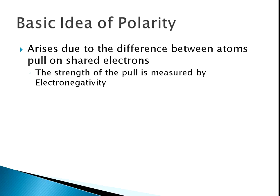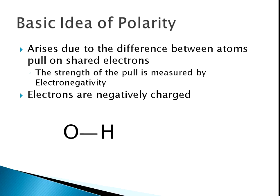When you have a bond in chemistry, you've got two atoms sharing electrons, but they're not necessarily shared equally. The other thing you need to know is that electrons are negatively charged. So let's consider what we call the OH bond — an oxygen atom bonded to a hydrogen atom. The oxygen is a greedy atom; it's very electronegative. This means it has a very strong pull on the electrons that make up that bond.